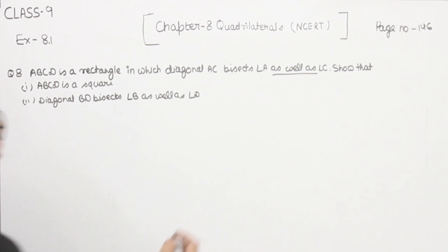Now, AB is equal to CD, as they are opposite sides. And AD is equal to CB, or BC. Since AB is equal to CD and CD is equal to AD, that means all four of them are equal. Therefore, ABCD is a square. So this is part 1, where we have proved that ABCD is a square.